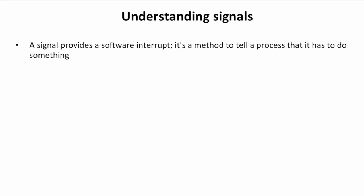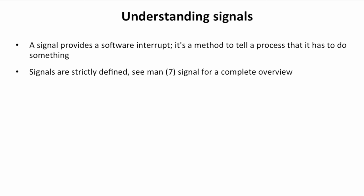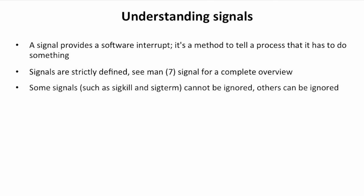Now let's talk about signals. A signal provides a software interrupt, and that's a method to tell a process that it has to do something. Signals are strictly defined, and you can see in man 7 signal a complete overview of all the signals that have been defined. Some signals, such as SIGKILL and SIGTERM, cannot be ignored. Others can be ignored. Also, you will notice that some signals always have the same function, and other signals are specific to a command. It's up to the programmer how he wants to deal with a specific incoming signal.